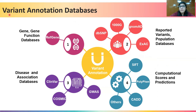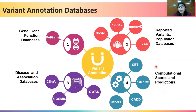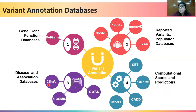We already know that there are various variant annotation databases that can annotate these features, such as gene and gene function databases like RefGene, population databases like 1000 Genomes, NOMAD, and ExAC. There are also computational score prediction databases such as SIFT, PolyPhen, and CADD that can assign pathogenicity scores, and disease association databases such as ClinVar that can tell if the variant has been previously linked with any disease.